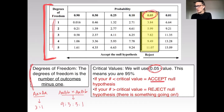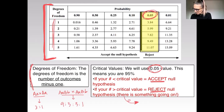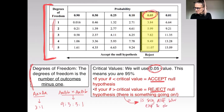If your chi-square number is higher than the critical number, then you are going to reject the null hypothesis. That just means there is a significant difference between expected and observed, and something else is going on — for example, something might be gene linkage.